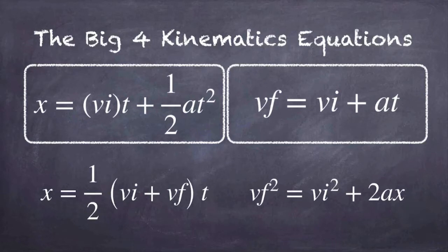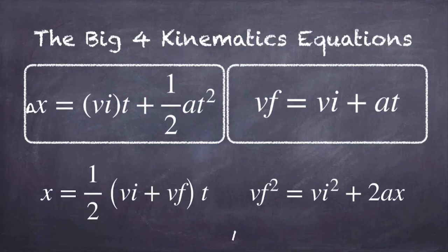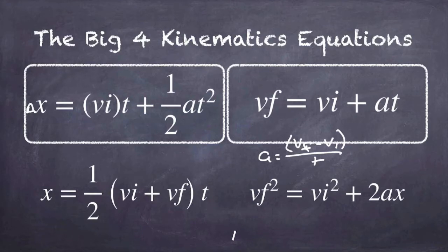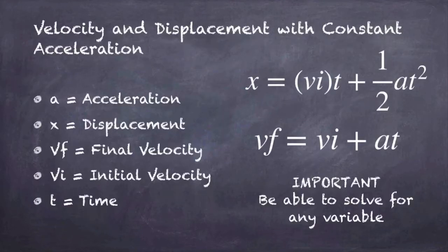Here's the plan. We've got the big four kinematics equations. The ones we're going to work on today are these ones. The first one involves displacement — delta x — when we have initial velocity, time, and acceleration. The second one is actually the average acceleration equation: acceleration equals final velocity minus initial velocity divided by time. It's the same equation, just solved for final velocity. The other two we'll do in different videos.